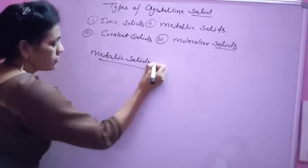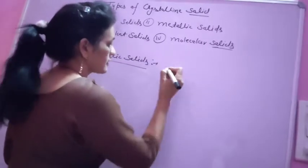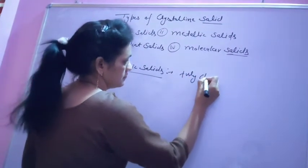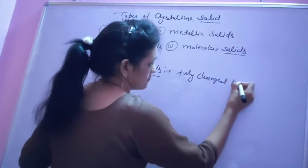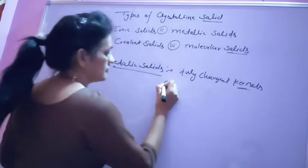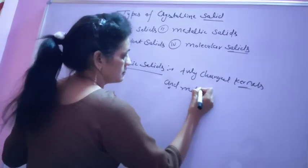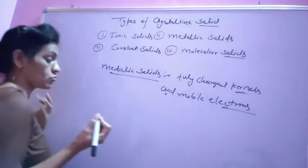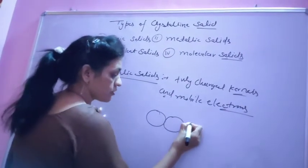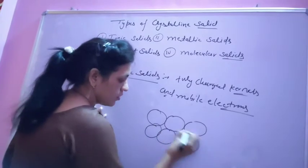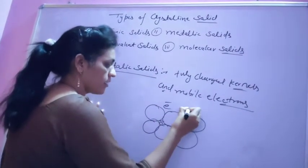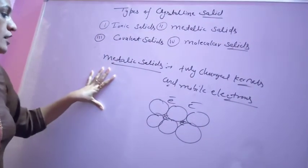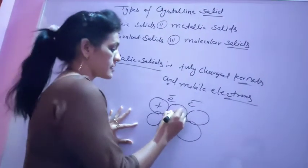The constituent particles are positively charged kernels and mobile electrons. For example, in copper, copper atoms form kernels and release mobile electrons that move freely. The force of attraction is between the positive-charge kernels and the mobile electrons — opposite charges attract each other.